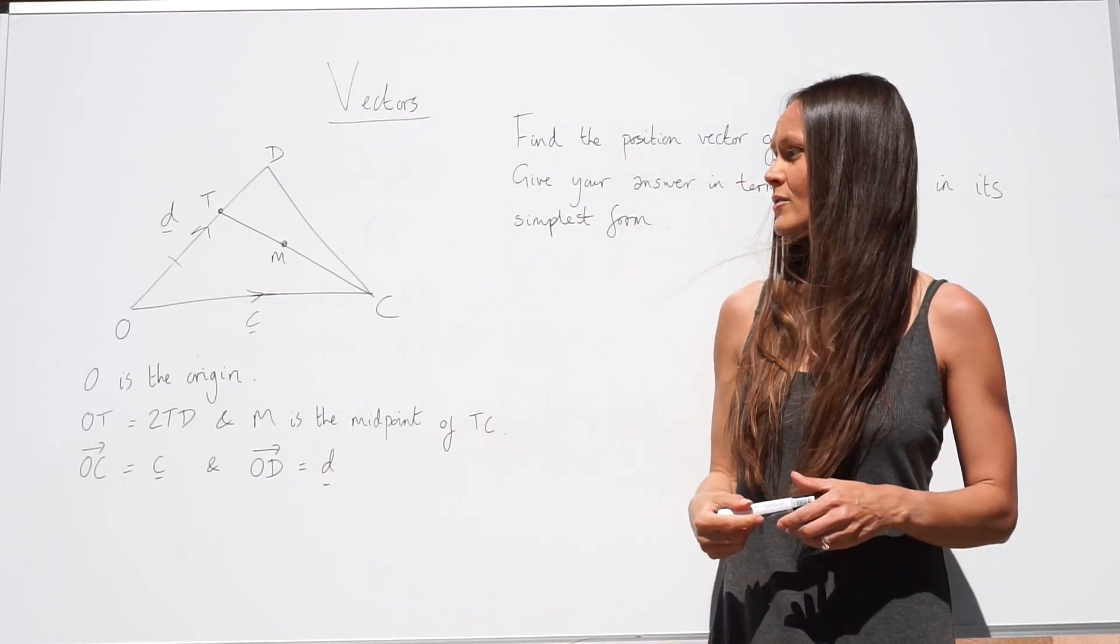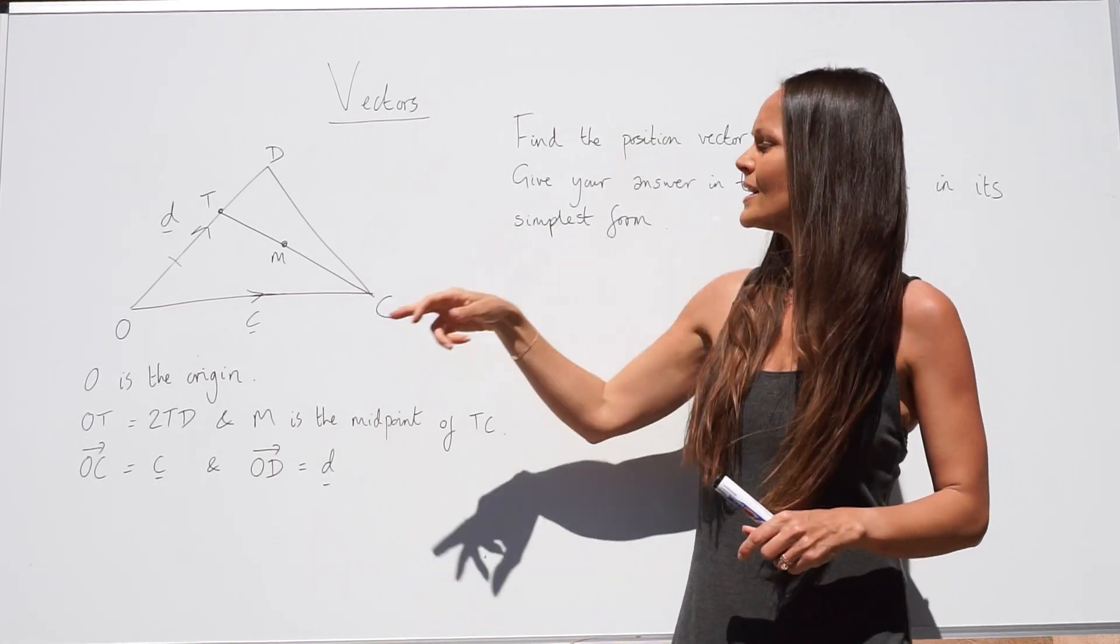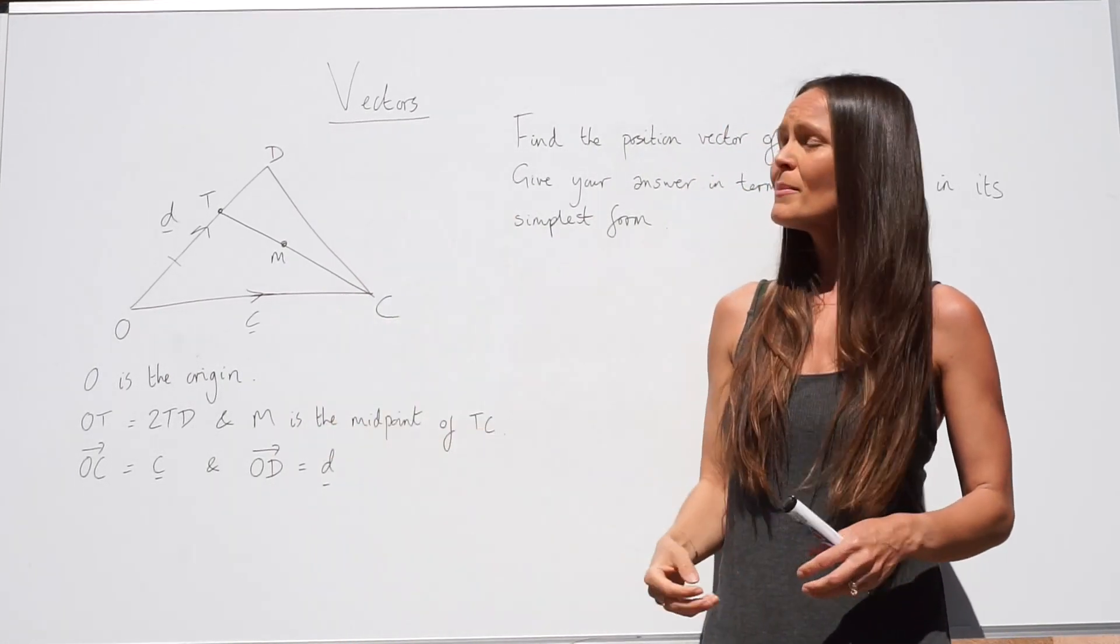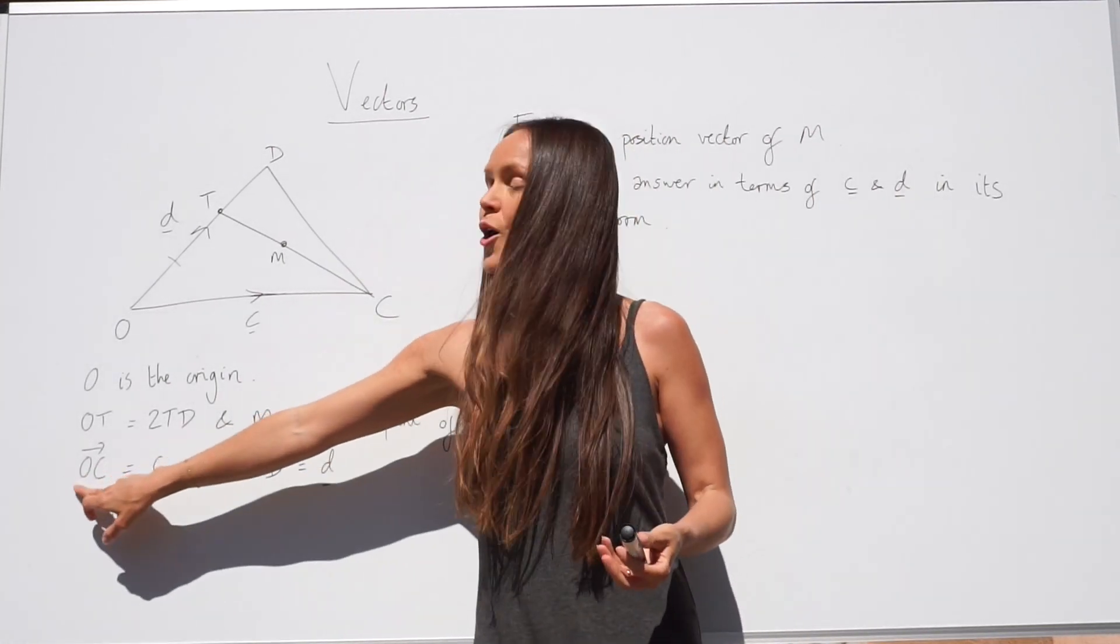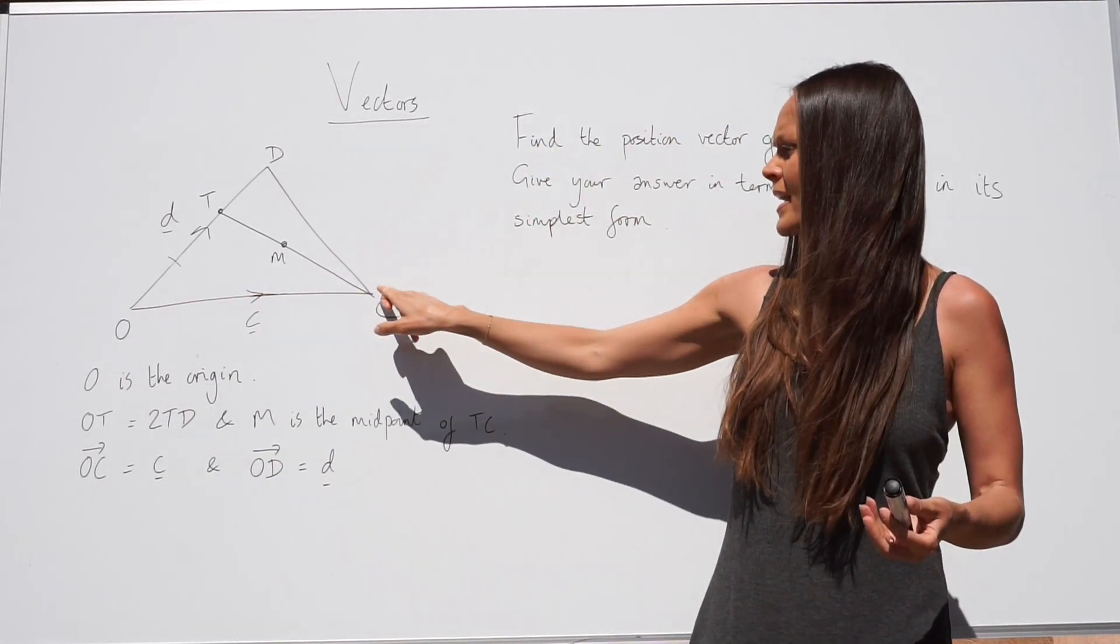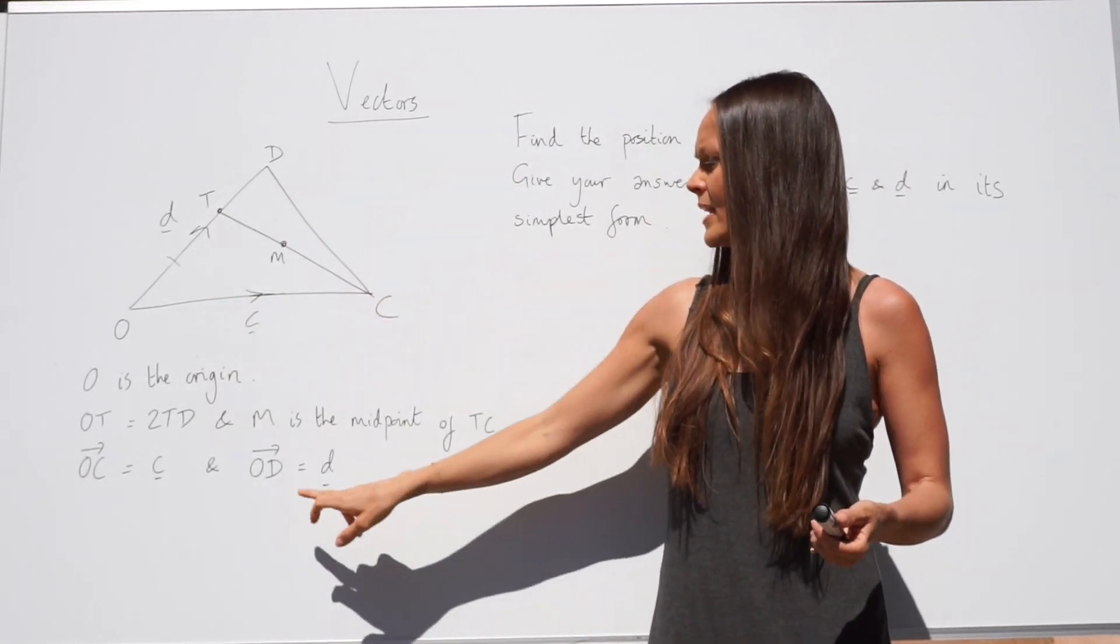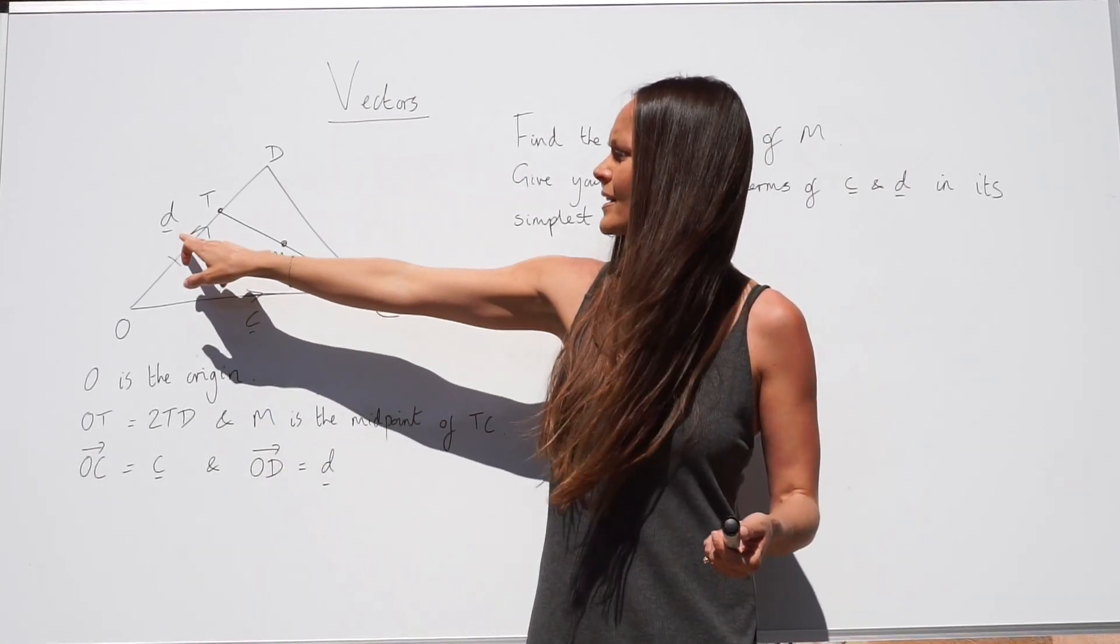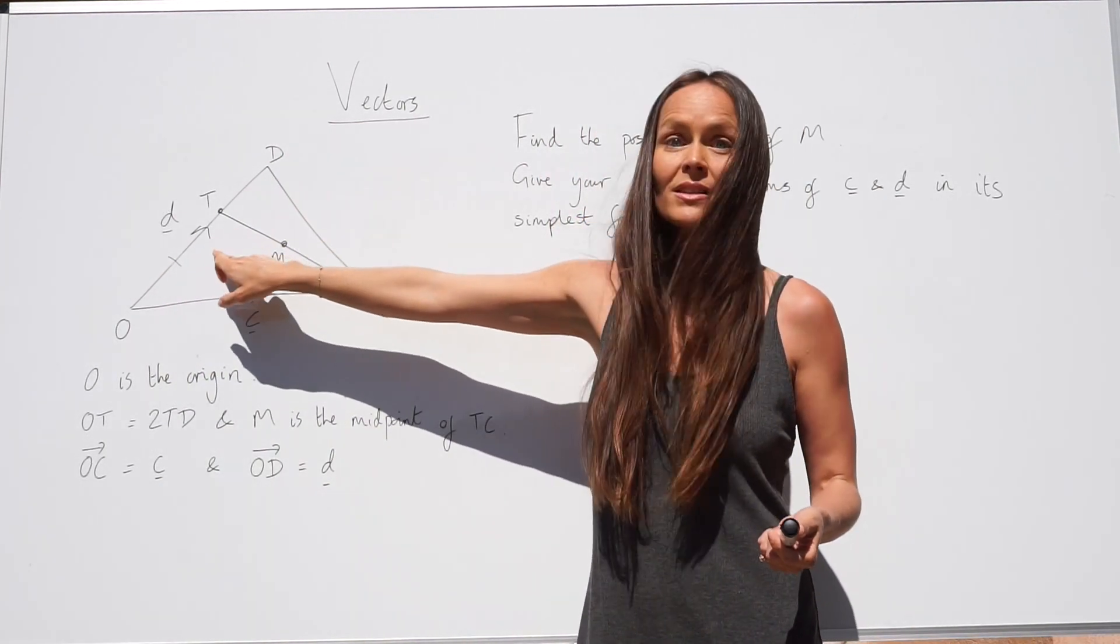So these weren't already on the diagram, so I suggest you draw these onto the diagram. So here's vector C. Remember there's an arrow to go with the vector because the direction is important. We're going from O towards C, so the arrow is pointing this way, because we're travelling from left to right. And then for OD, here's vector D and we're travelling this way, so the arrow is pointing upwards.